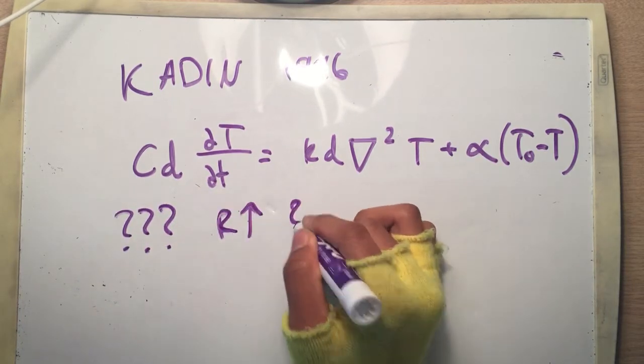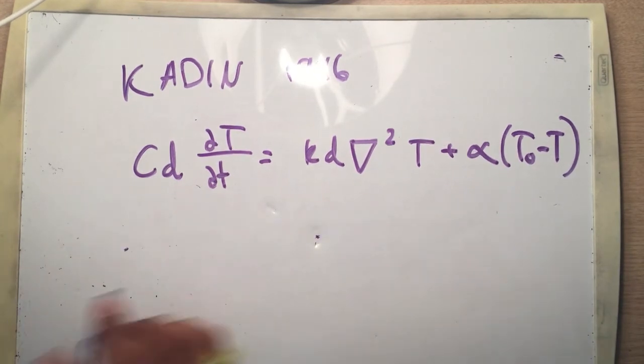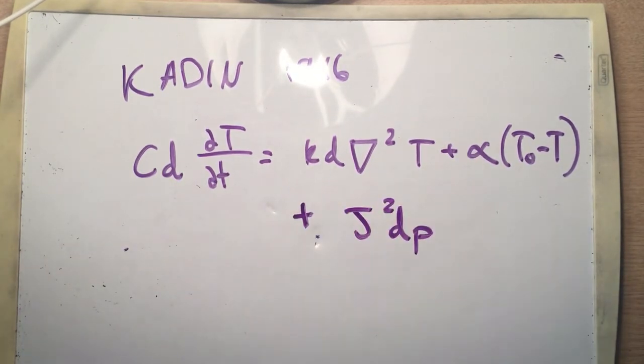However, in further measurements of the resistive hotspots in different experiments, the results were greater than predicted. This led to modifying Kadin's heat equation to include the Joule heating effect produced from the increase in current density as mentioned before. Here we see that J is the current density and P is the electrical resistivity.